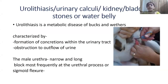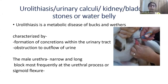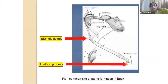Urolithiasis — also known as urinary calculi, kidney stones, bladder stones, or water belly — is a metabolic disease primarily affecting bucks and wethers. It is a male-oriented, gender-biased disease characterized by the formation of concretions within the urinary tract that obstruct urine outflow. A contributing factor is the male urethra, which is narrow and long, with blockages occurring at specific locations like the urethral process or the sigmoid flexure. If the blockage is at the urethral process, it is relatively easier to remove.